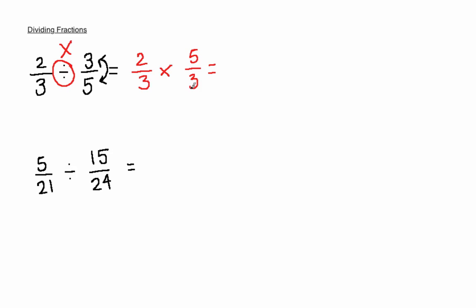Now you can continue with this question as if it was a multiplication question. We cannot cancel down any of the numbers so we simply multiply the numerators together and then multiply the denominators together.